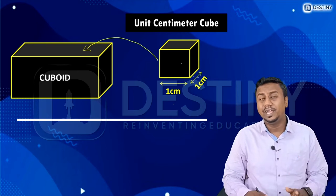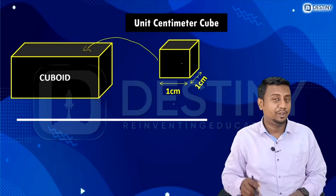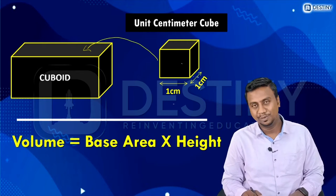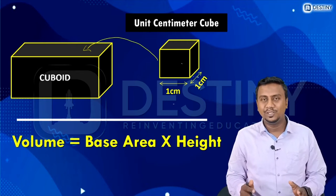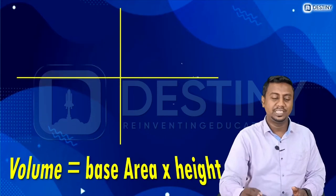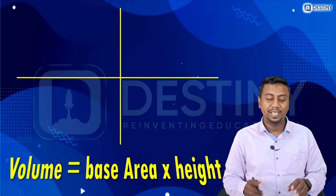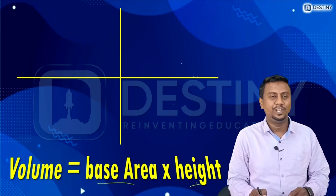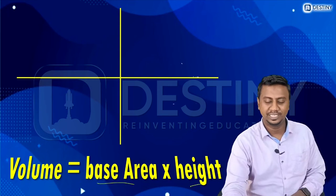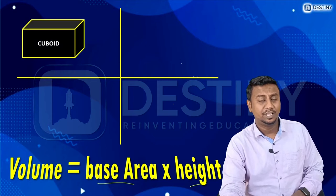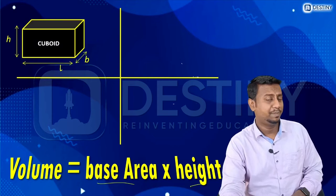For area we used base times height. For volume we use base area times height. We will apply this to four basic shapes to find their volumes. The four basic shapes are: a cuboid with length l, breadth b, and height h.